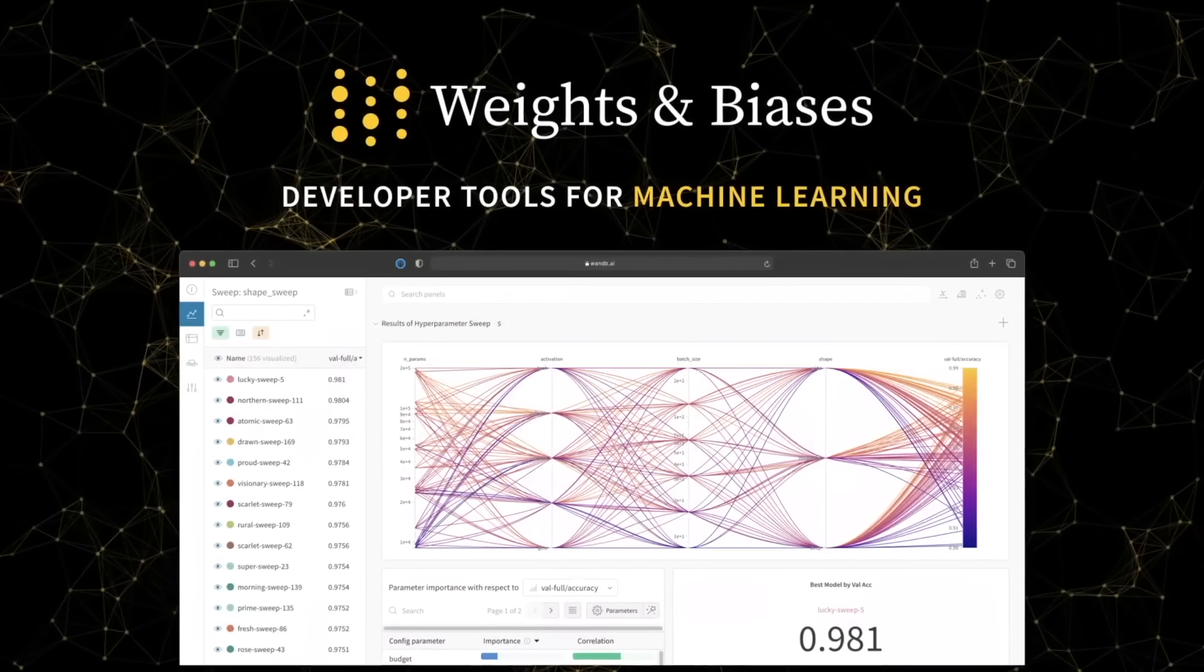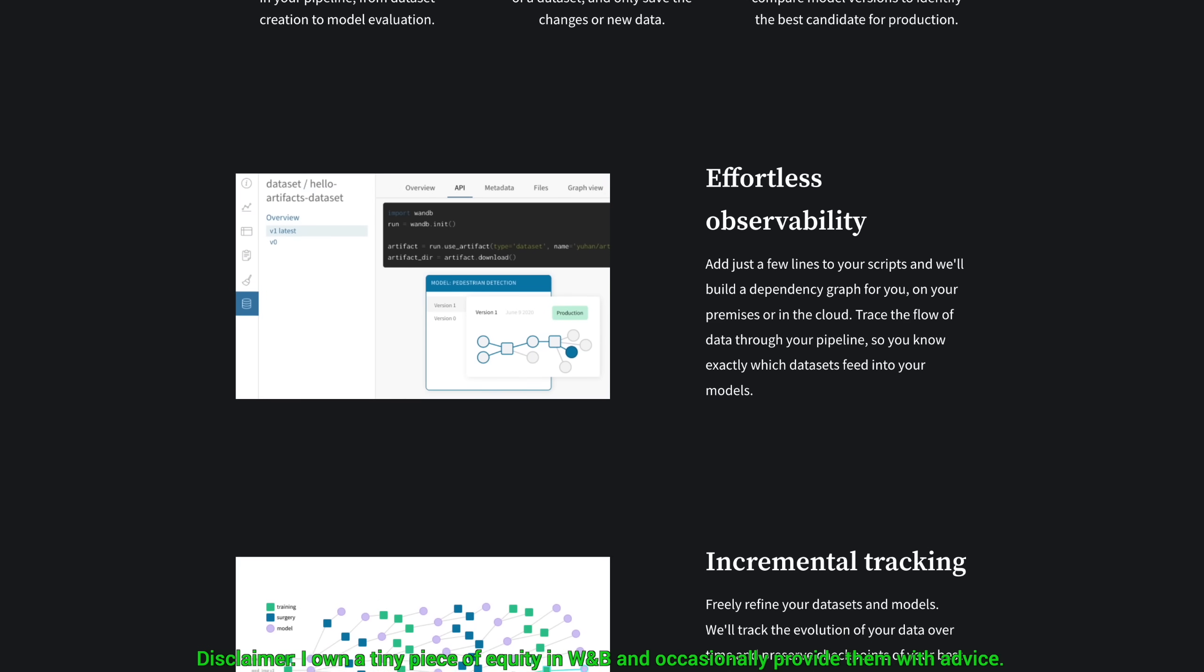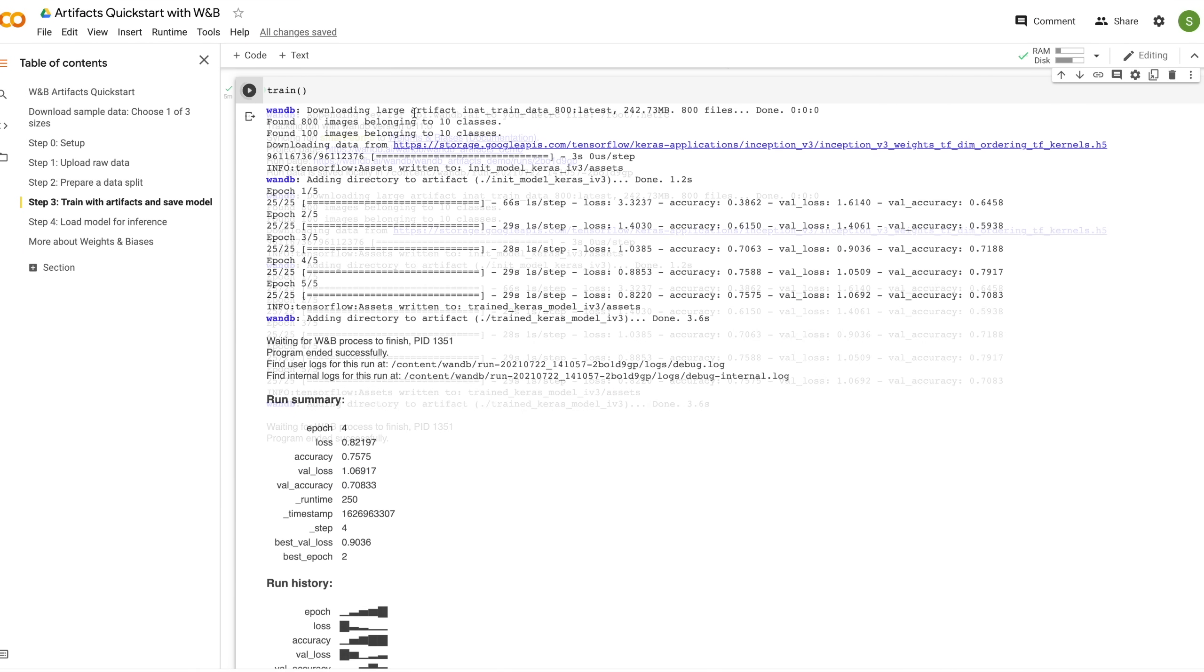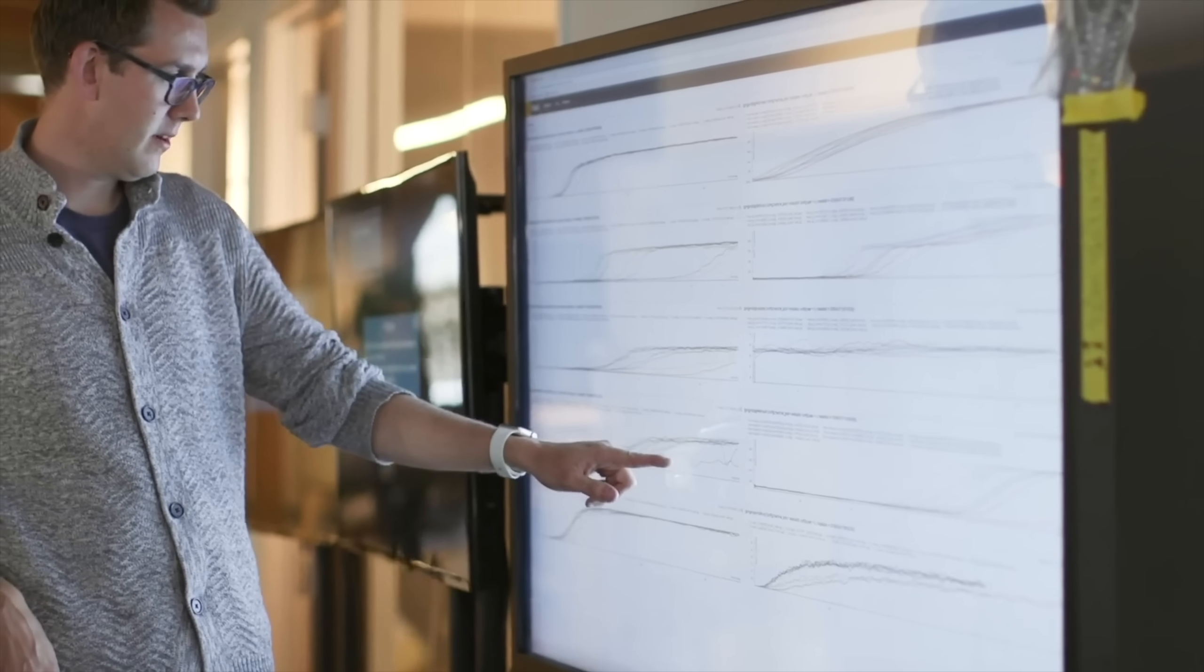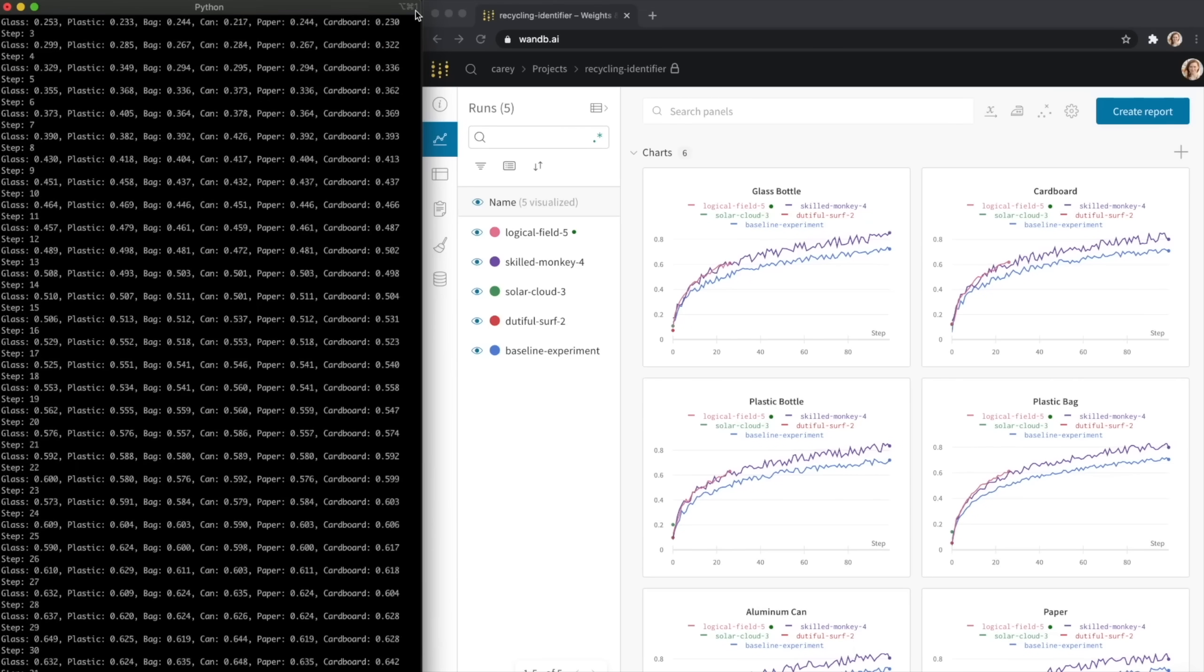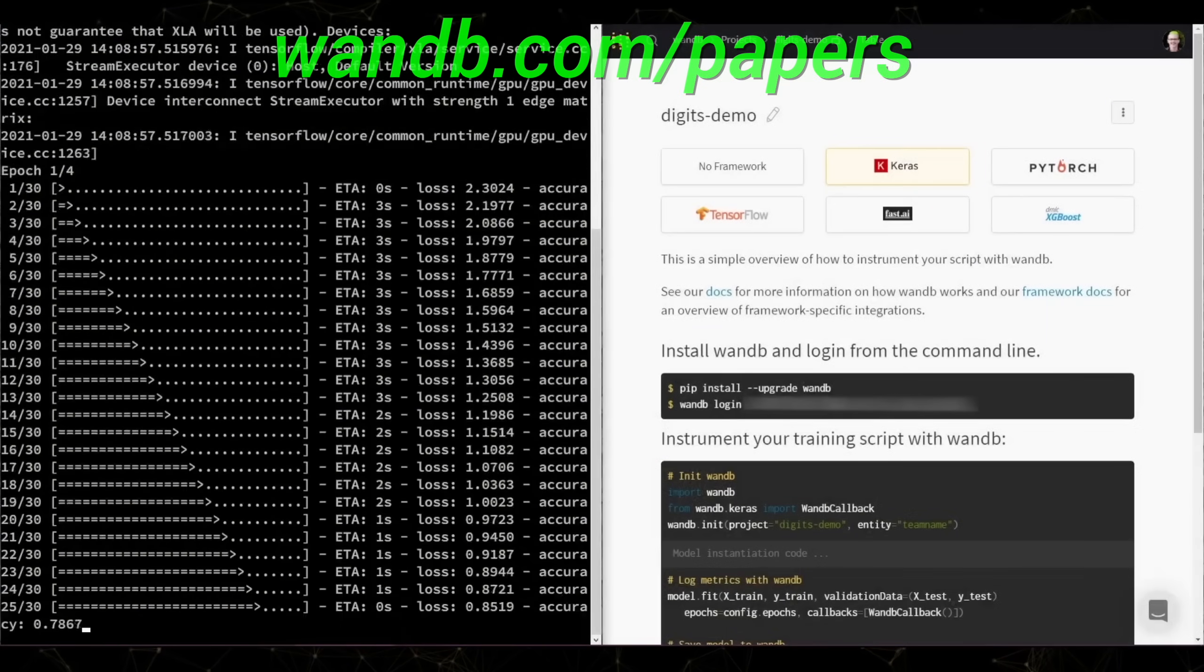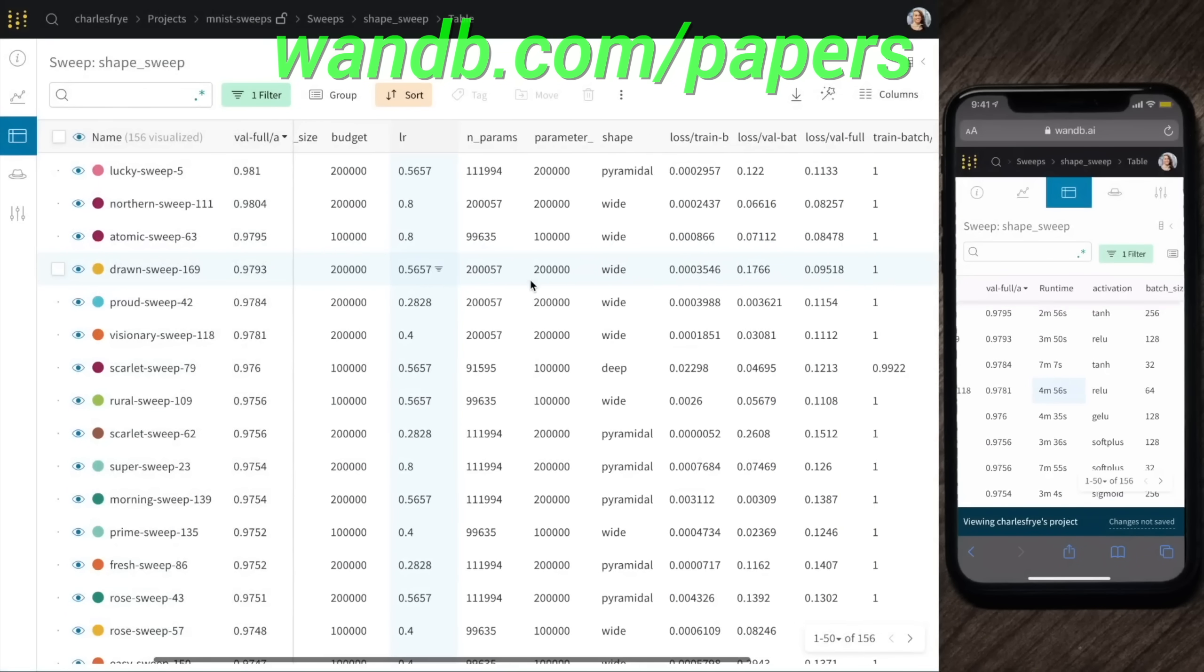Weights and Biases provides tools to track your experiments in your deep learning projects. What you see here is their artifacts feature, which speeds up the most common machine learning steps, like uploading raw data, splitting it into training, validation, and test sets, and of course, the best part, starting to train a neural network. It is used by many prestigious labs, including OpenAI, Toyota Research, GitHub, and more. And the best part is that Weights and Biases is free for all individuals, academics, and open source projects. Make sure to visit them through wnb.com/papers, or just click the link in the video description, and you can get a free demo today. Our thanks to Weights and Biases for their longstanding support and for helping us make better videos for you. Thanks for watching and for your generous support, and I'll see you next time!